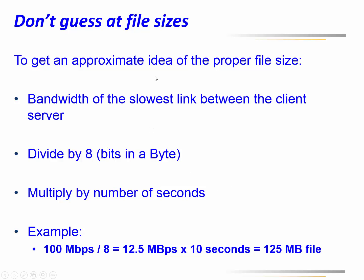As a quick review: to get an approximate idea of the proper file size for testing, take the bandwidth of the slowest link, divide by 8, then multiply by the number of seconds you'd like to test. For example, 100 meg divided by 8 is 12.5 megabytes per second, and for a 10-second test you multiply by 10 to get a 125 megabyte file. It doesn't have to be exact — 100 or 130 meg is fine — as long as you know the size you can do the math backwards and find out how long it should take.